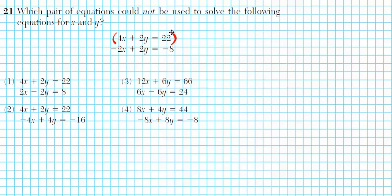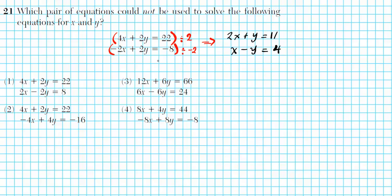For equation one, the GCF of 4, 2, and 22 is 2, so we divide by 2. For the second equation, the GCF of negative 2, 2, and negative 8 is negative 2, so we divide by negative 2. Dividing the first equation by 2 gives 2x plus y equals 11. Dividing the second equation by negative 2 gives x minus y equals 4. Note that any time you divide by a negative, the signs invert. The question is which option upon simplification does not yield this system — that one is the answer.